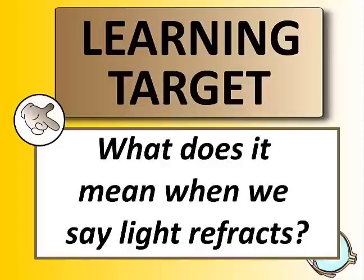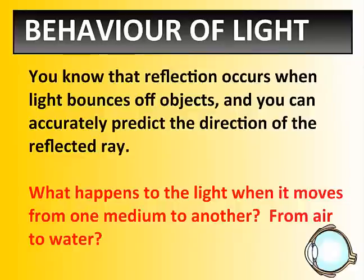We're going to focus on the bending of light, and what does it mean when we say light refracts? Have you heard that term before? Refracts. We've talked about reflection, but what about refraction? You know that reflection occurs when light bounces off an object. You can accurately predict the angle that it will come back at, as long as you know the angle that it entered at — it's the law of reflection.